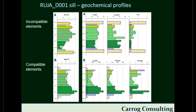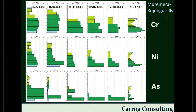Arsenic is interesting because it's not really supposed to be a compatible element in basaltic melts, but it does show this correlation with nickel in other sills as well. In the Rojungu A sill, chromium, nickel, and arsenic profiles all show a basal enrichment in each of these thin sills. However, the chromium enrichment is broader and not so tightly restricted to the basal sample as we see for nickel and arsenic.